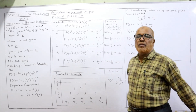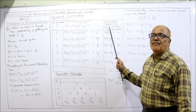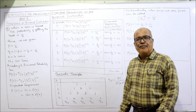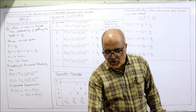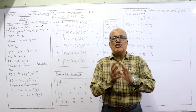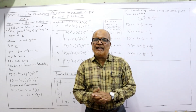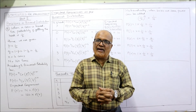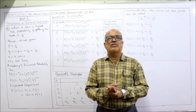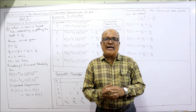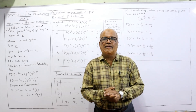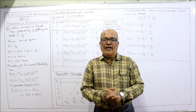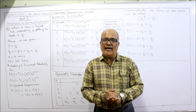This is the first problem where we have calculated expected frequency as per binomial distribution — that is the procedure. We have now completed 9 problems. We will continue with the next problem in the next video. If you are satisfied, give a like, share the channel among your friend circle so more students can watch and enhance their knowledge, and subscribe if you haven't yet.